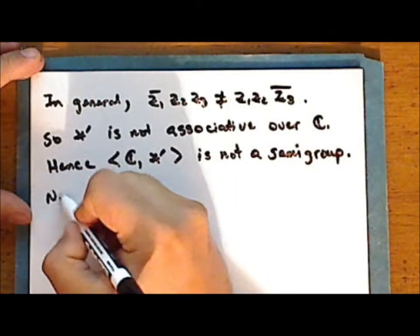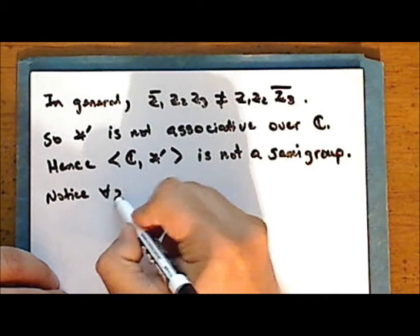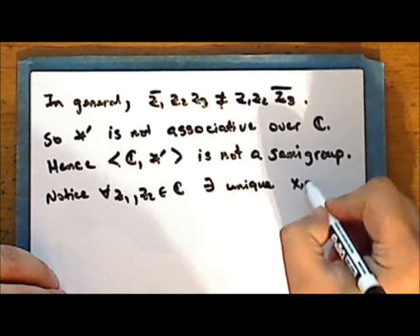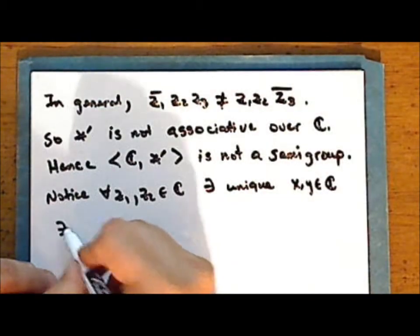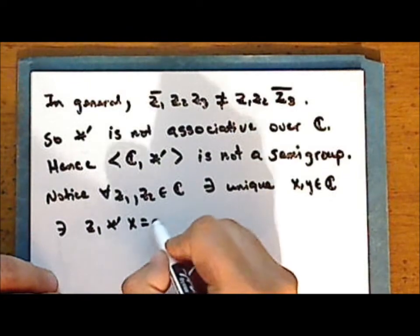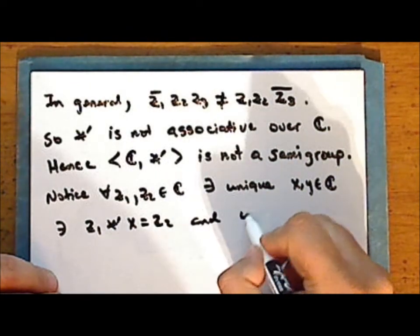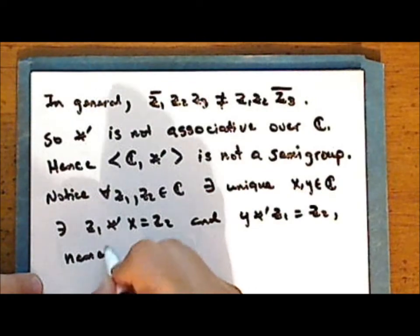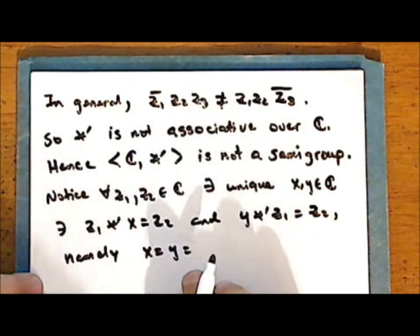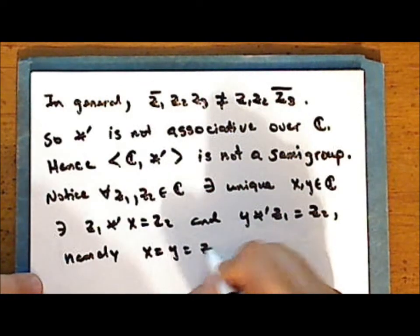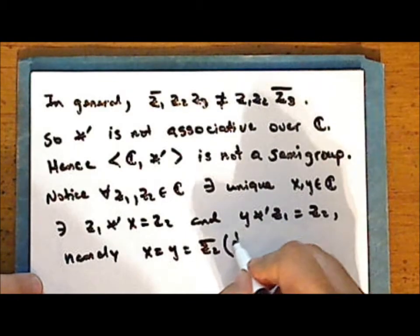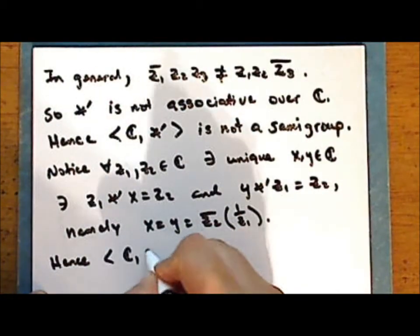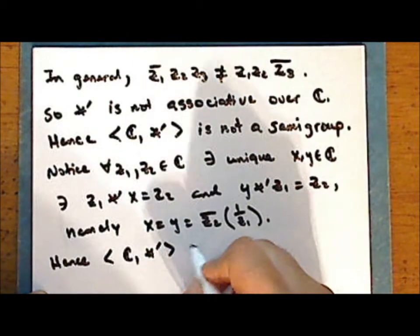For every pair of complex numbers z1 and z2, there exist unique complex numbers x and y such that z1 star-prime x gives z2, and y star-prime z1 gives z2. Namely x equals y since the operation is commutative, and this is the conjugate of z2 times the reciprocal of z1. Hence the complex numbers together with binary operation star-prime is a quasi-group.